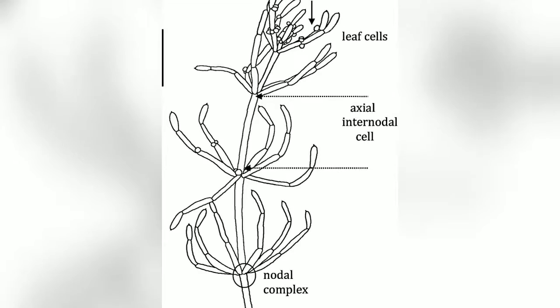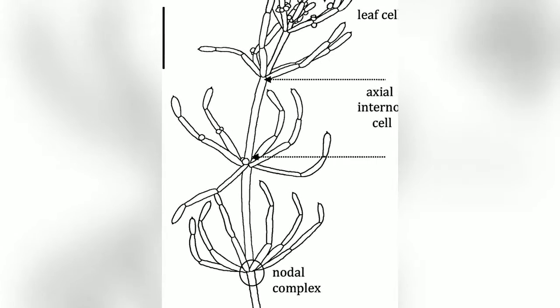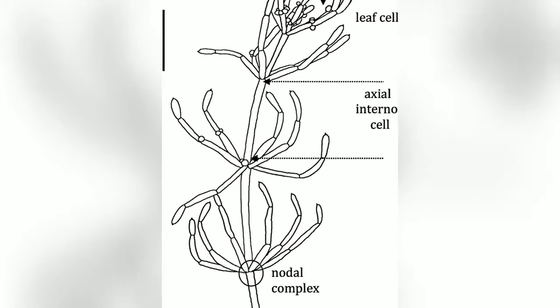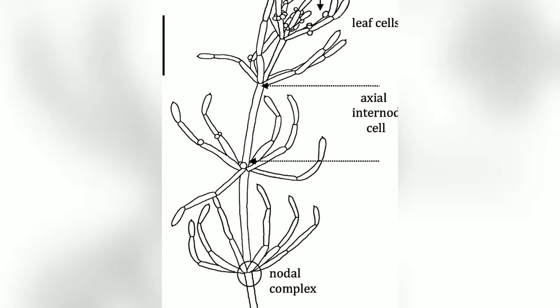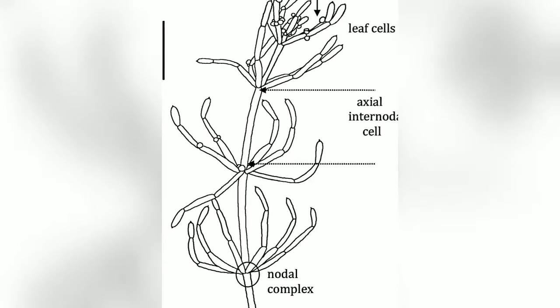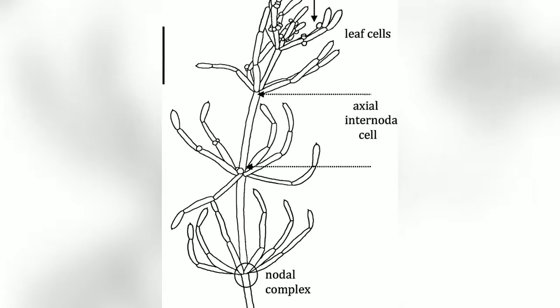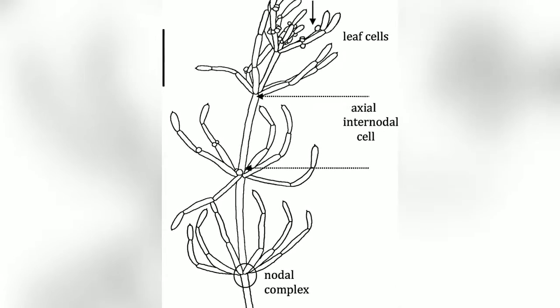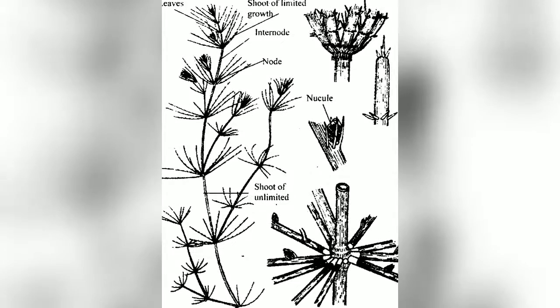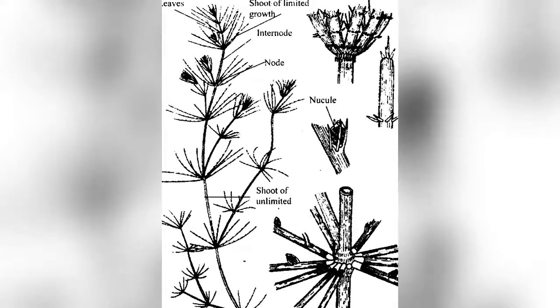Internodal cells are elongated with a large central vacuole and many nuclei and innumerable discoid chloroplasts, which lack pyrenoids.